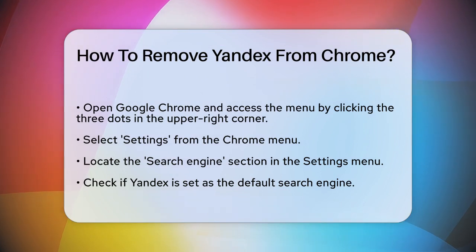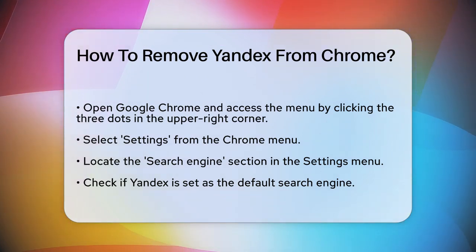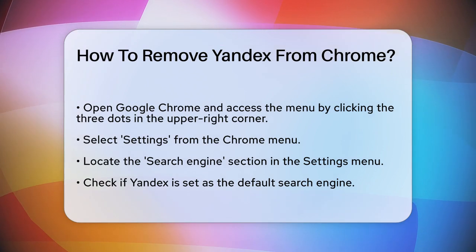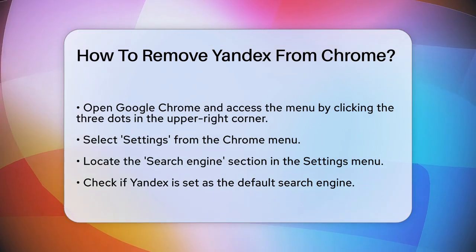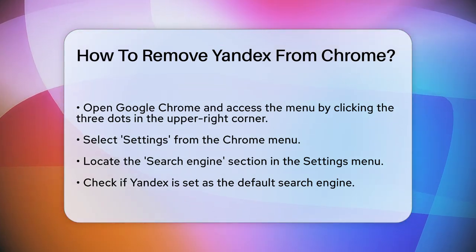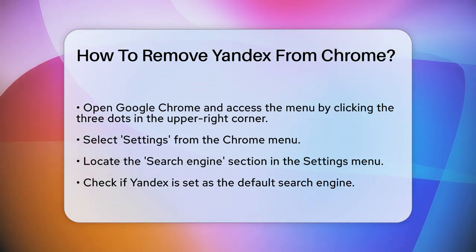First, open Google Chrome and click on the three dots in the upper right corner. This will open the Chrome menu. From here, select Settings.